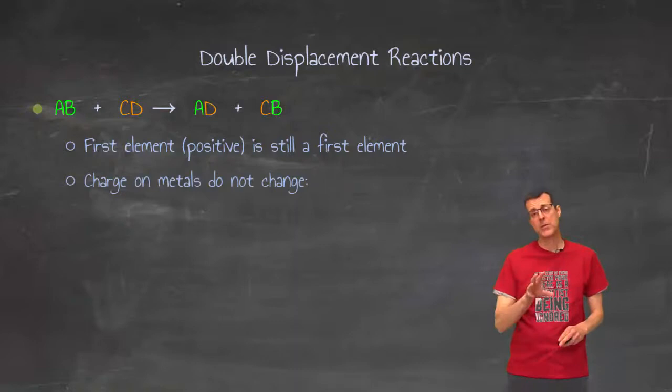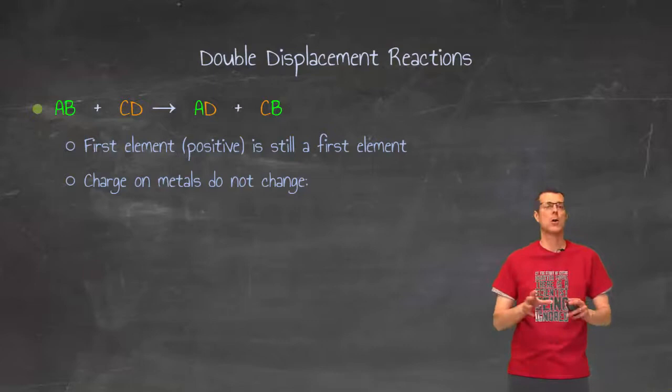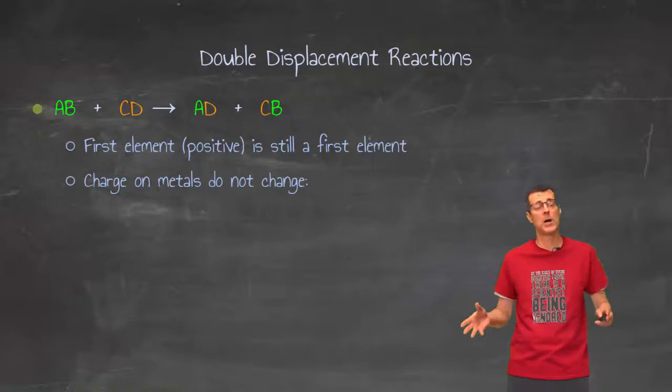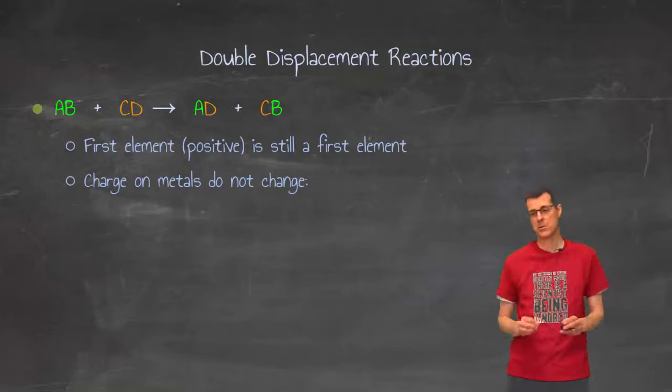The other thing that's kind of important when we get to the point of predicting products is that the charge of the metals are not going to change. So even if you have metals where you can have more than one possible charge on that metal, it's not going to change the charge as it goes through a double displacement reaction, it will stay the same.